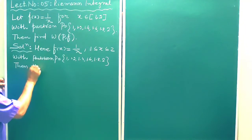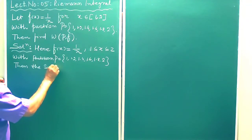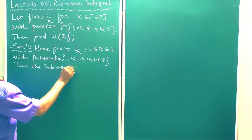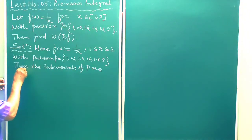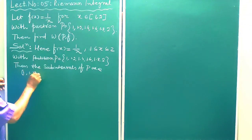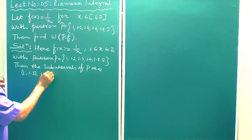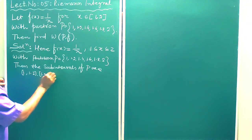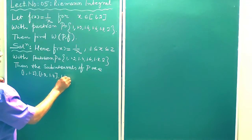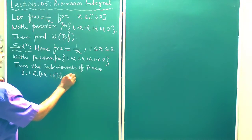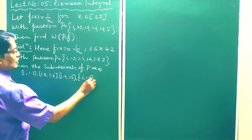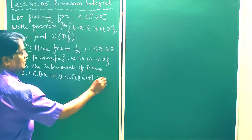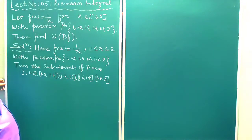The sub-intervals of P are: [1, 1.2], [1.2, 1.4], [1.4, 1.6], [1.6, 1.8], and [1.8, 2]. These are the sub-intervals of the partition.